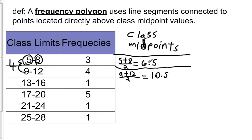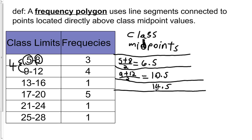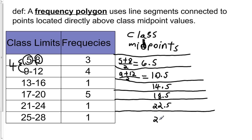Once you have the first class midpoint, 6.5, you can just keep adding 4 to get all the other class midpoints. Take 6.5 and add 4 to get 10.5. Then 10.5 plus 4 gives 14.5. Then 18.5, then 22.5, and finally the last class midpoint is 26.5. This is a shortcut — just find the first one and keep adding the class width.